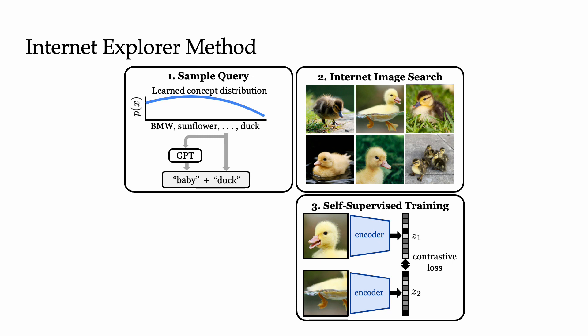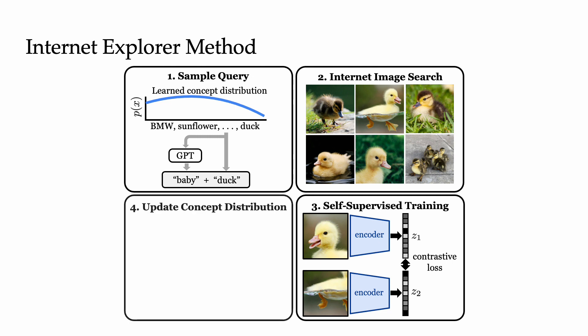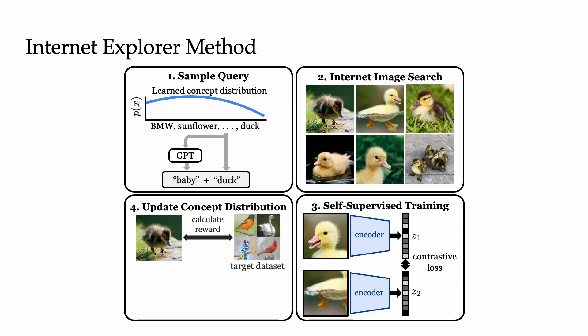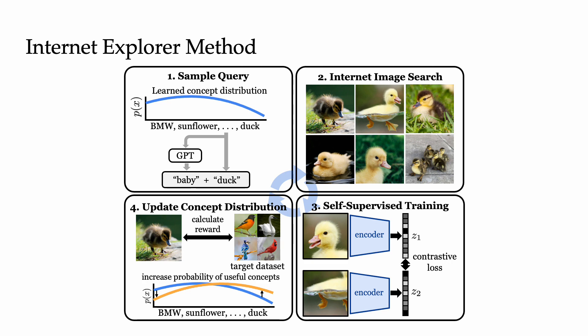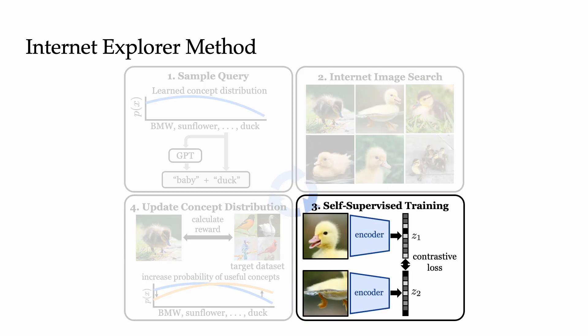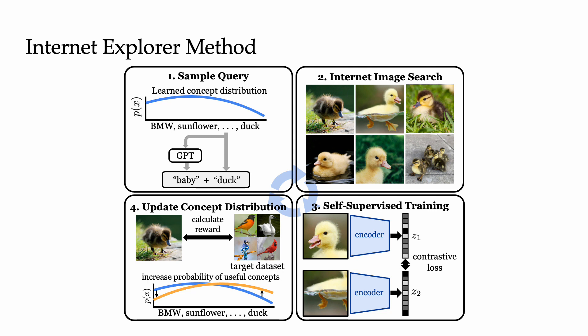You can use any self-supervised learning algorithm you like. Finally, we update our concept distribution. For each downloaded image, we calculate the relevance reward with respect to the target dataset. Then we use the calculated rewards to increase the probability of useful concepts. For example, since ducks are highly relevant to the bird target dataset, they'll get high reward and will increase the probability of concepts like duck. Irrelevant concepts like BMW will get low reward and decrease in probability. Our method is cyclical, so it continues executing each step in sequence, finding increasingly relevant data and learning better representations.